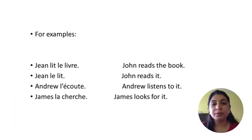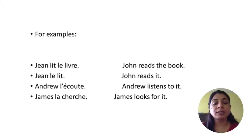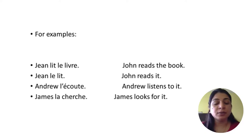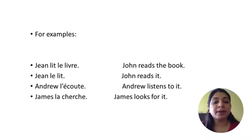Let's see some examples. 'Jean lit le livre' — Jean reads the book. 'Jean le lit' — Jean reads it. Since 'le livre' is a masculine noun, we use 'le'. 'André l'écoute' — André listens to it. 'James la cherche' — James looks for it. Notice the direct object pronoun is placed after the subject and before the verb.